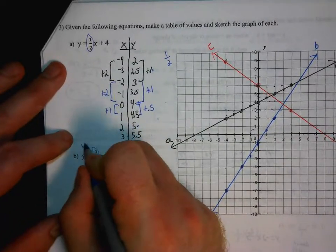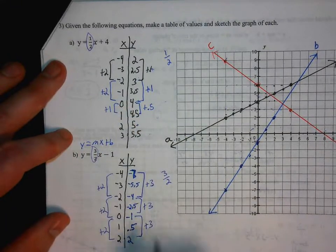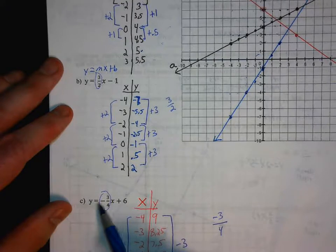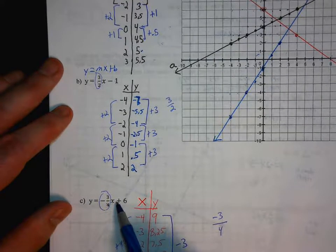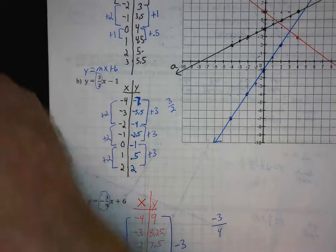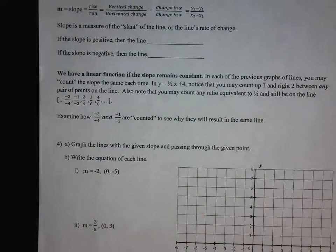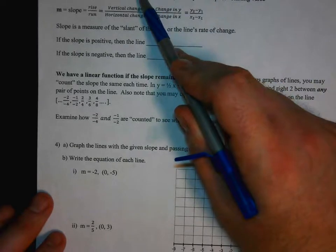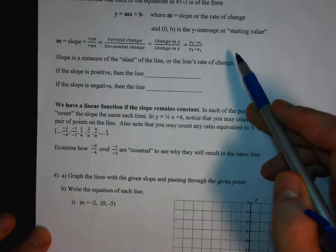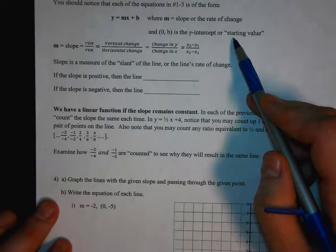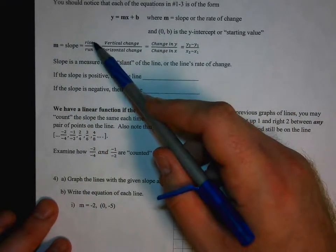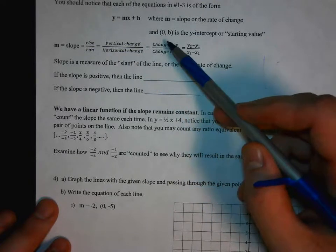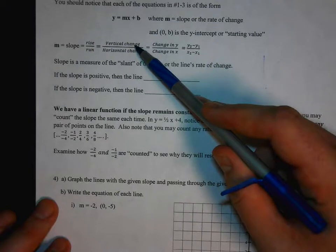In y equals m times x plus b, in part b, m is 3 halves and b is negative 1. In part c, m would be negative 3 fourths and b would be 6. Now, rather than making a table of values, we can make our process of graphing these lines a little bit faster. When we look at y equals mx plus b, m is the slope or the rate of change, and 0,b is the y-intercept or the starting value. Another way to look at the slope: you're probably familiar with rise over run — rise is going up or down, run is going left or right — vertical change over horizontal change, or change in y over the change in x.